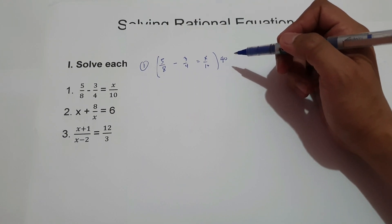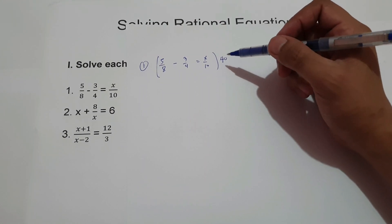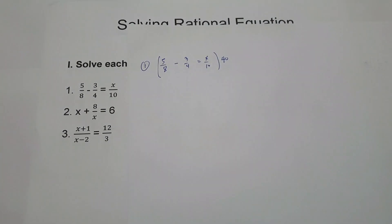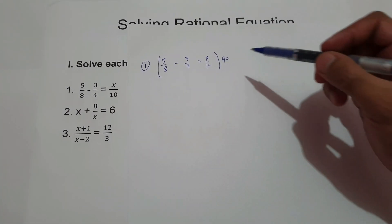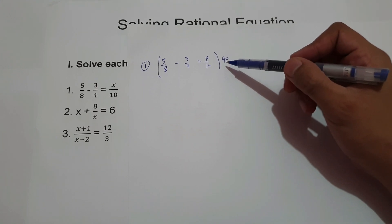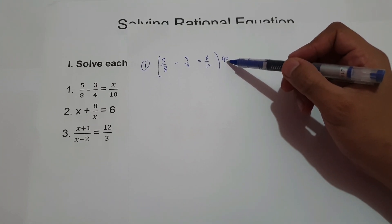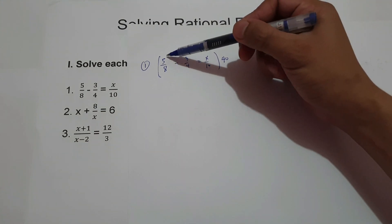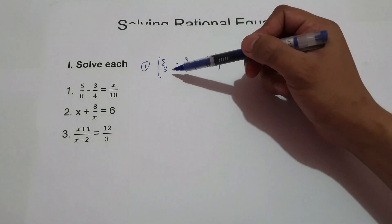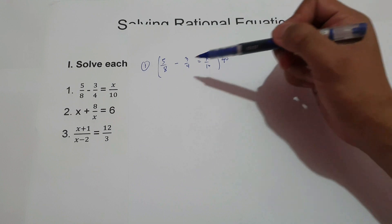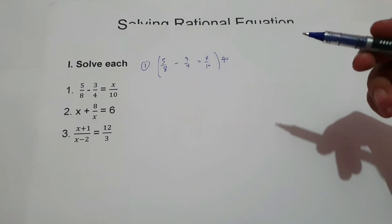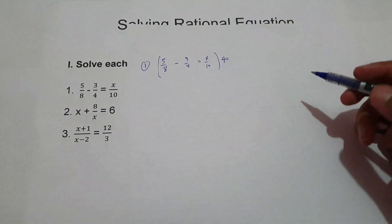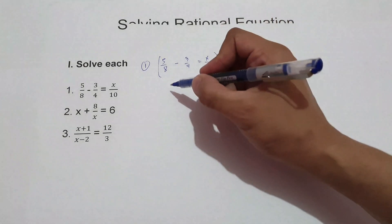If you find any difficulty in finding the least common multiple, you can multiply the whole equation by 8, 4, and 10 — that's no problem. So since the LCM is 40, we're going to multiply 40 on each term of the equation. We have 5 multiplied by 40 divided by 8, or 40 divided by 8 times 5. Now, 40 divided by 8 is 5, times 5 is 25.